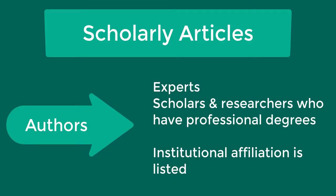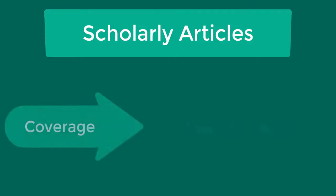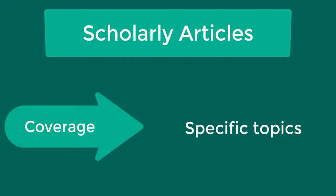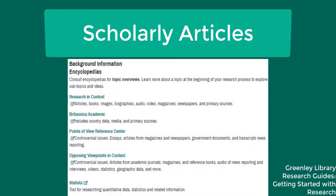Authors' credentials are usually listed, including professional degrees such as a PhD or MD, as well as the institutions where the authors work, such as a college, research institution, or hospital. The audience for scholarly articles usually includes other specialists in the subject area, researchers, and students. The scope of coverage is typically very narrow and focuses on specific areas within a subject. For a broad topic overview, you might refer to encyclopedia articles instead.